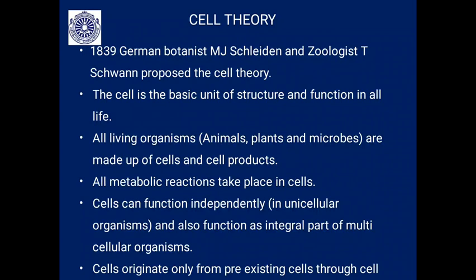In 1839, German botanist M.J. Schleiden and zoologist T. Schwann proposed the cell theory. According to this theory, the cell is the basic unit of structure and function in all life forms. All living organisms — animals, plants, and microbes — are made up of cells and cell products. All metabolic reactions take place in cells. Cells can function independently in unicellular organisms such as protozoa, and also function as an integral part of multicellular organisms. Cells originate only from pre-existing cells through cell division or mitosis.